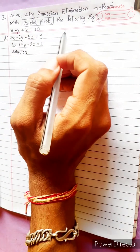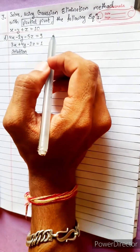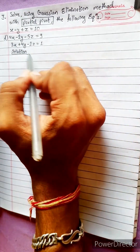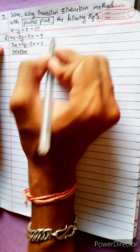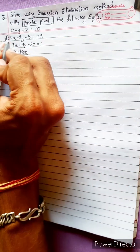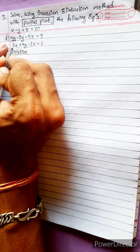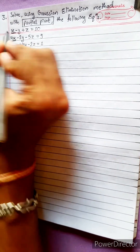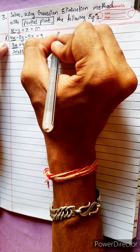Solve using the Gaussian elimination method with partial pivoting. In partial pivoting, equations are arranged in descending order, with the highest coefficient for x first and the least coefficient arranged in order after that.